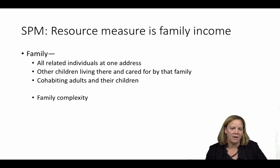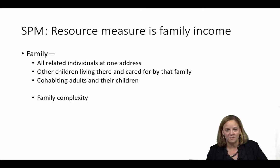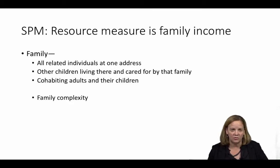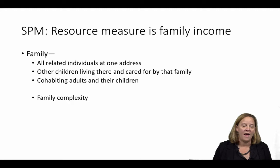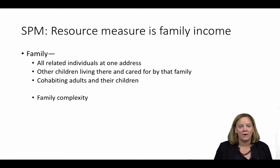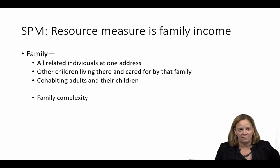First, the Supplemental Poverty Measure, or SPM as it's called, looks at family income, but defines family slightly differently than the old measure. The SPM includes in a family all related individuals at the same address, along with co-resident unrelated children cared for by that family, and any cohabitors and their children. This recognizes that family arrangements have become more complex since the 1960s, when the Official Measure was crafted.